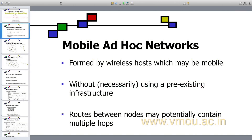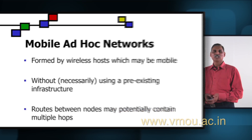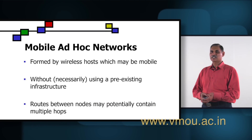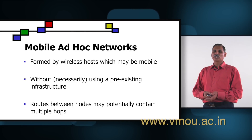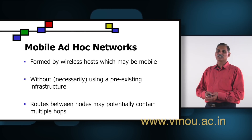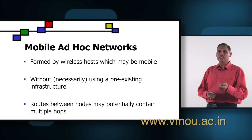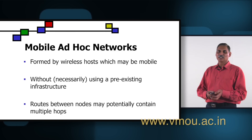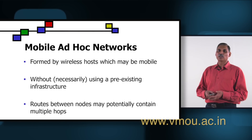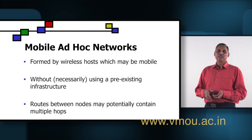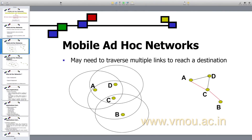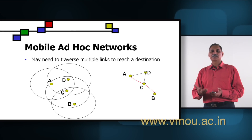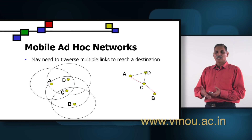A mobile ad hoc network is formed by wireless sources which may be mobile without necessarily using a pre-existing infrastructure. We do not need any pre-existing infrastructure for mobile ad hoc networks, and the routes between the nodes may potentially contain multiple hops. It is not possible that every source and destination will be connected on a direct link. There may be a need to go through multiple hops with the help of nodes in between the source and destination. The mobile ad hoc networks may need to traverse multiple links to reach the destination — for example, suppose A is my source which wants to send some information to destination B.